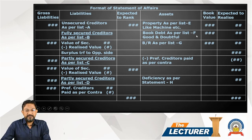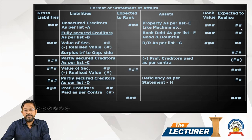Then book debts as per List F — classified as good, doubtful, etc. — shown at realizable value. Bills receivable as per List G, with book value and realizable value. Then preferential creditors are deducted as per the contract.